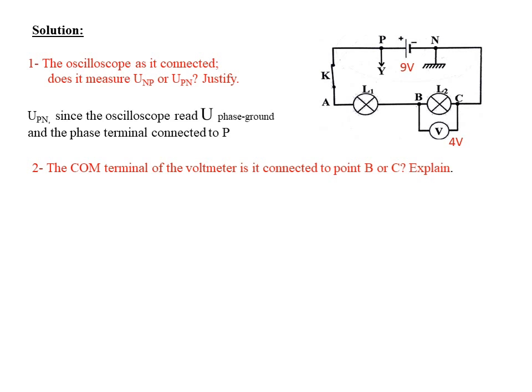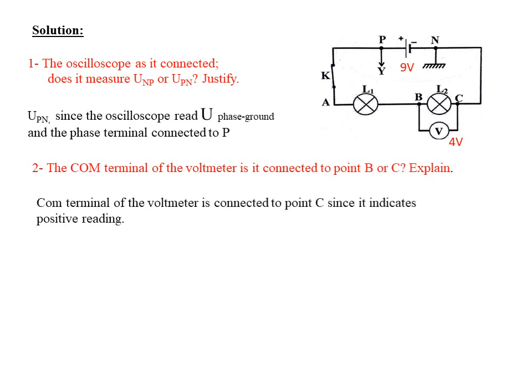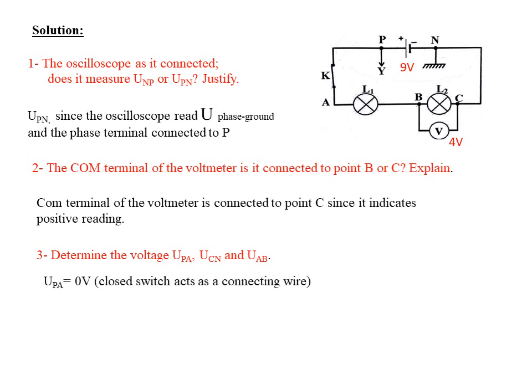Since from the given information the voltmeter indicates a positive reading of 4 volts, the COM terminal is connected toward the negative terminal. Therefore the COM terminal of the voltmeter is connected to point C. Determine the voltage U_pa. Since the switch is closed, U_pa equals zero — a closed switch acts as a connecting wire, so the voltage across it is zero volts.